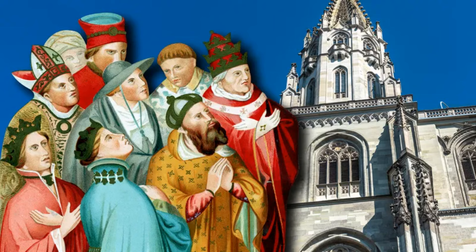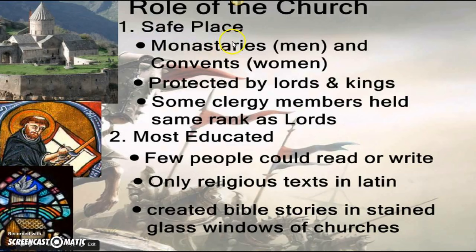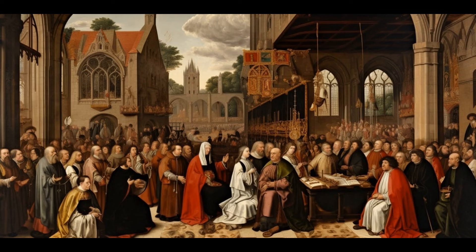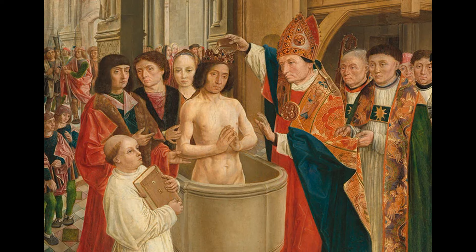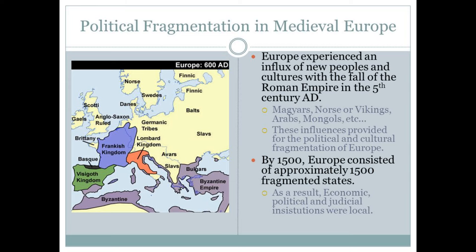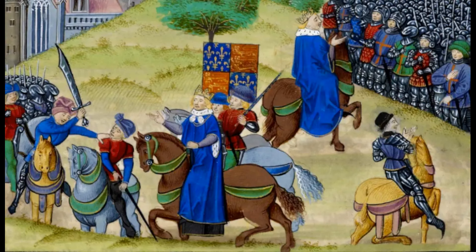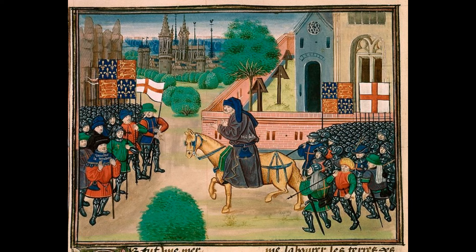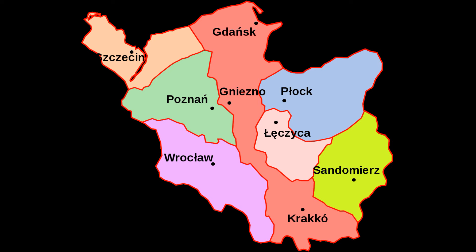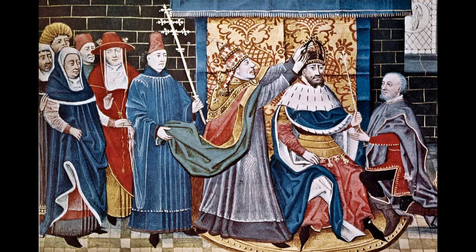Role of the Church. The Catholic Church played a central role in medieval European society. It provided spiritual guidance, education, and served as a unifying force. The Pope wielded significant political power, and the Church owned vast amounts of land and wealth. Medieval Europe was also politically fragmented, with power distributed among numerous kingdoms, principalities, and city-states. Centralized authority was weak, and monarchs often struggled to assert control over their territories.